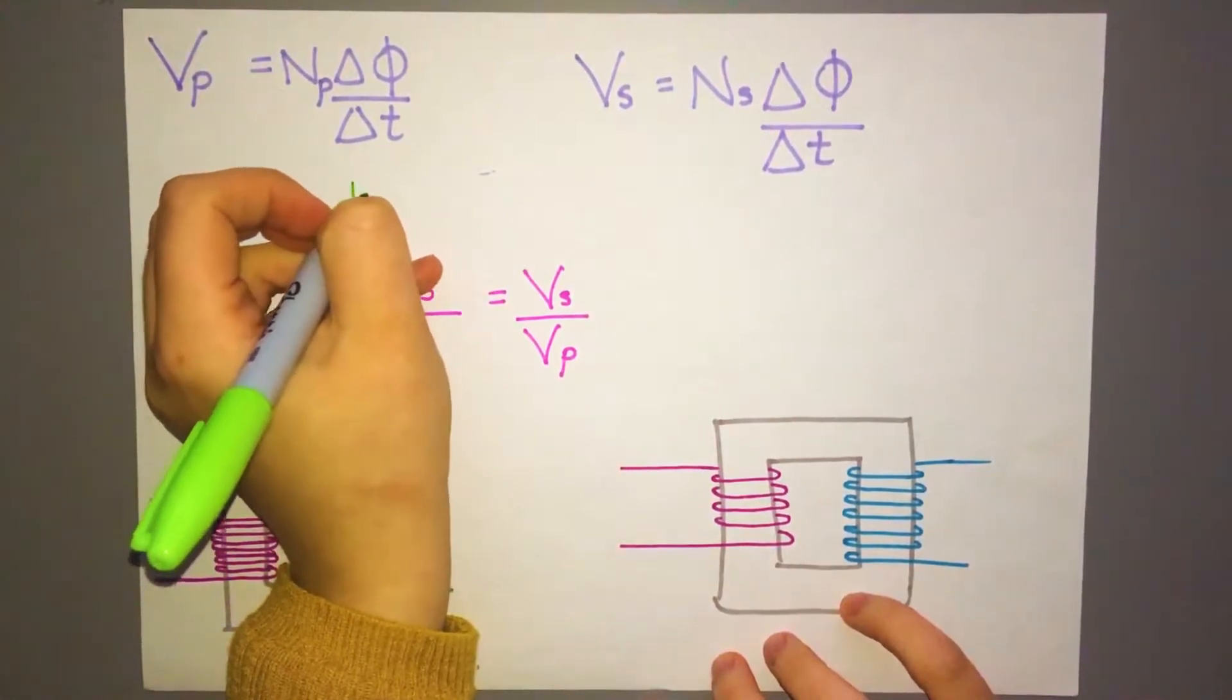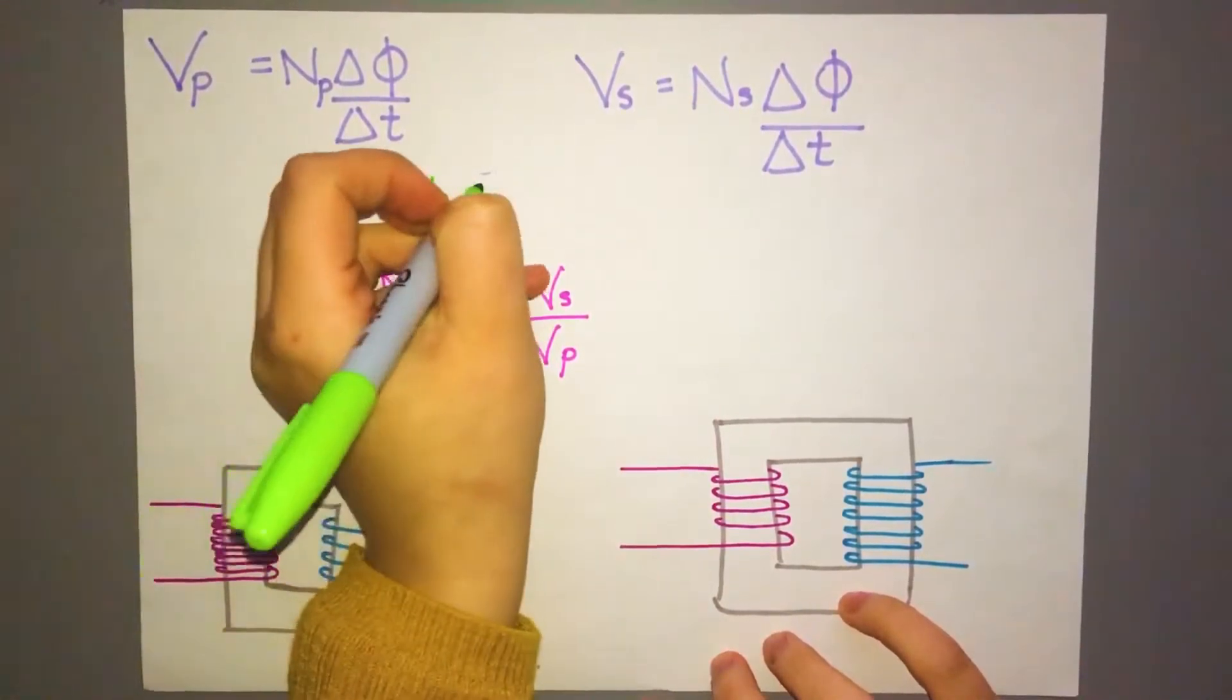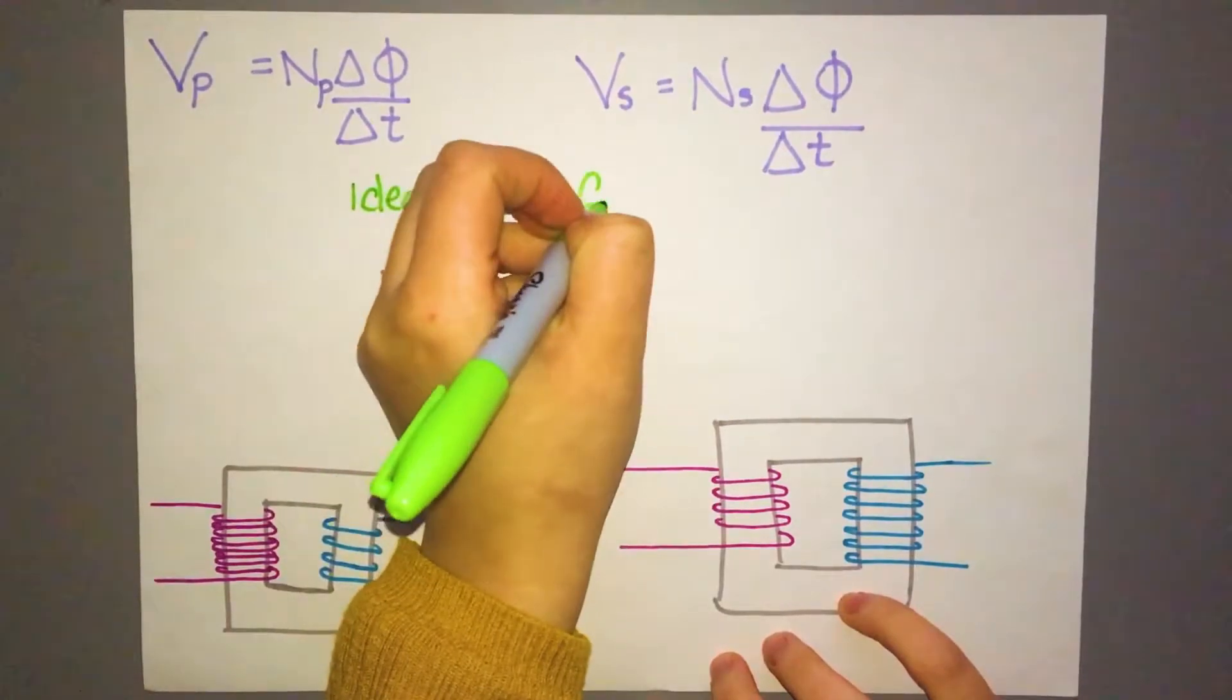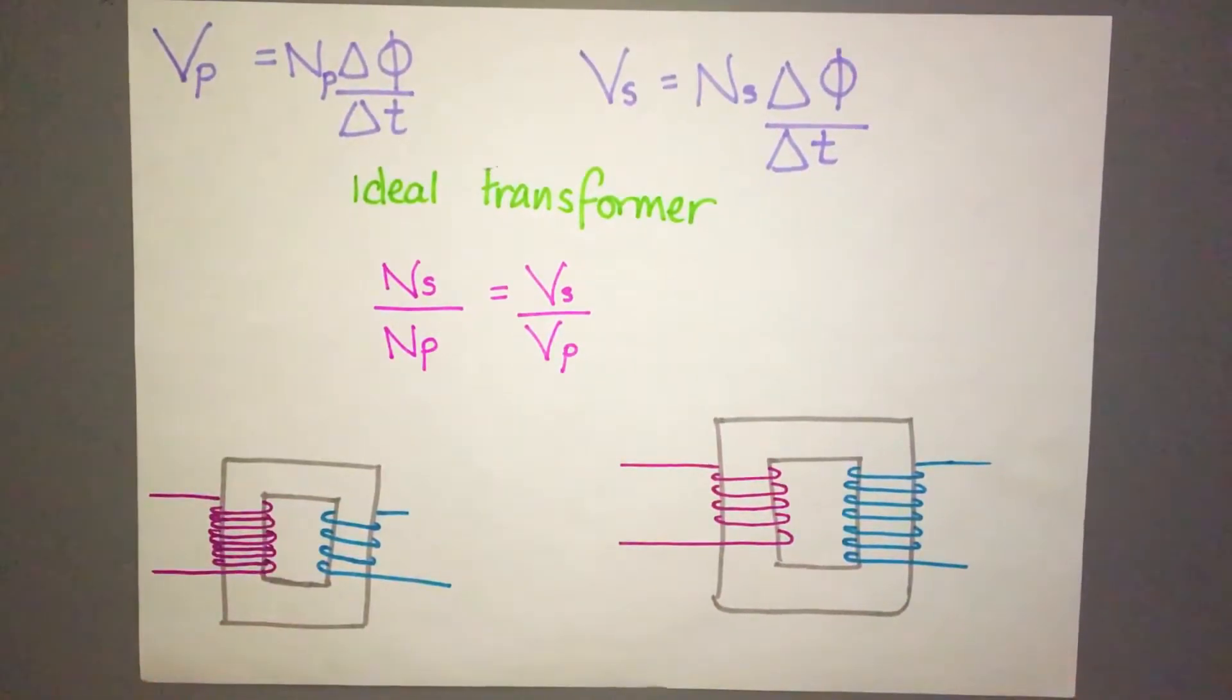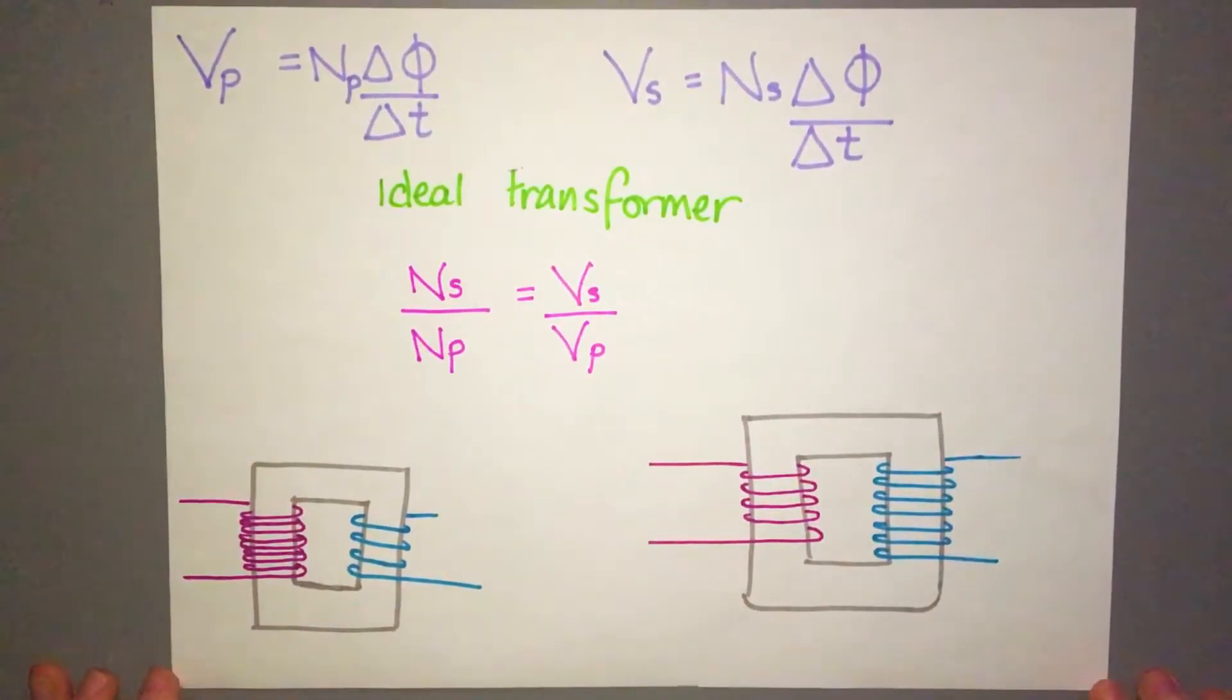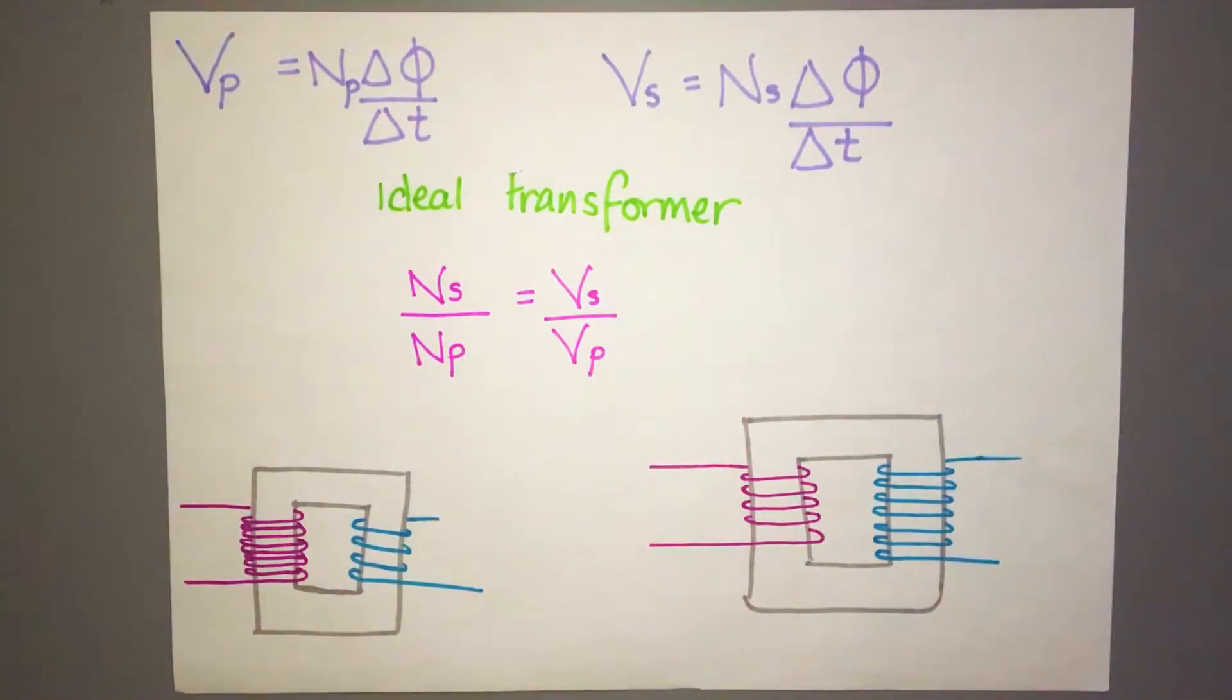So if we consider these for an ideal transformer, and what that means is we consider it to have 100% efficiency. Obviously that's not theoretically possible, nothing could be 100% efficient, but if we're considering an ideal transformer, then the number of turns on the secondary side divided by the number of turns on the primary side equals the voltage of the secondary side over the voltage of the primary side. So this is the equation we can use to find out if we have an ideal transformer, what the input and output voltages are going to be.